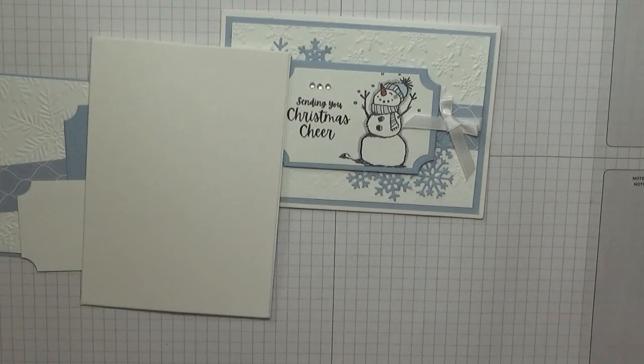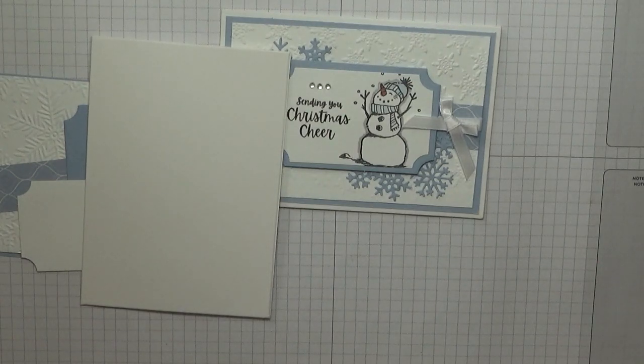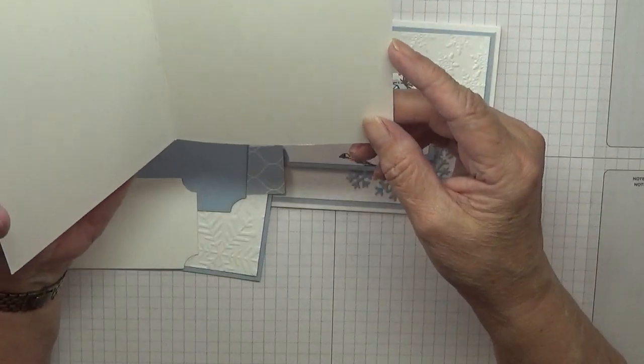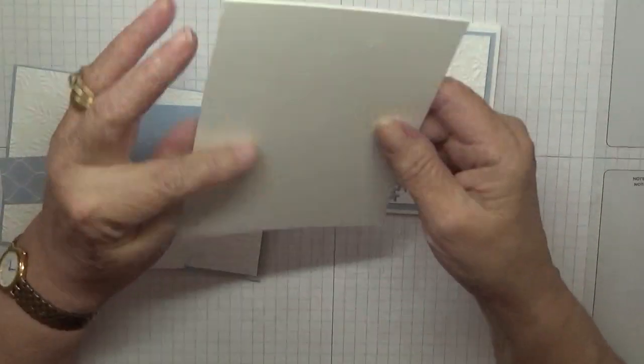Card stock I've got—oh, and I haven't got a card blank. Hang on, let me get a card blank. I forgot to get one. I've got a card blank of 8 and a quarter by 5 and 7 eighths, scored at 4 and 1 eighth, folded in half.